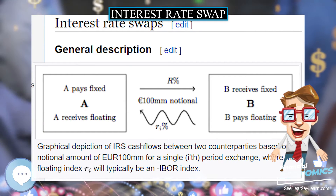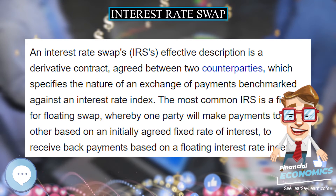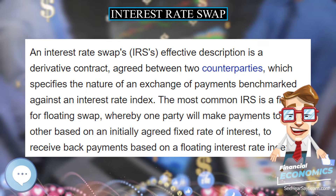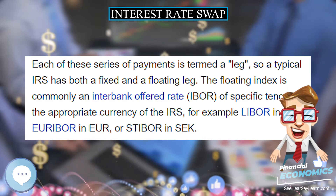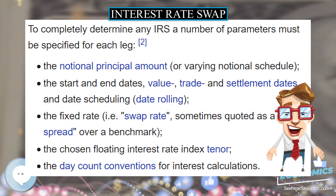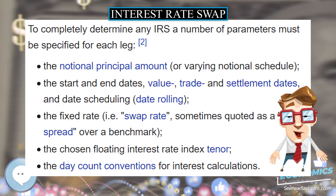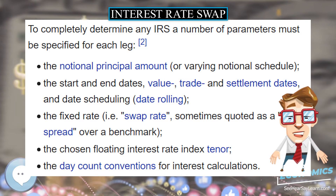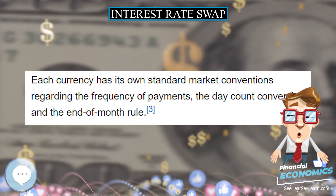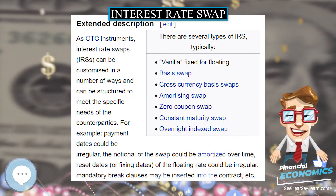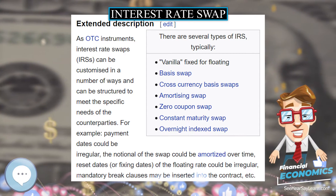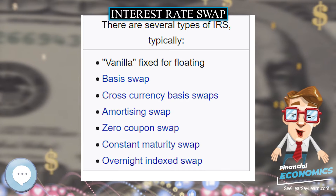Here, overnight index swap (OIS) rates are typically used to derive discount factors, since that index is the standard inclusion on credit support annexes (CSAs) to determine the rate of interest payable on collateral for IRS contracts. As regards the rates forecast, since the basis spread between IBOR rates of different maturities widened during the crisis, forecast curves are generally constructed for each IBOR tenor used in floating rate derivative legs.